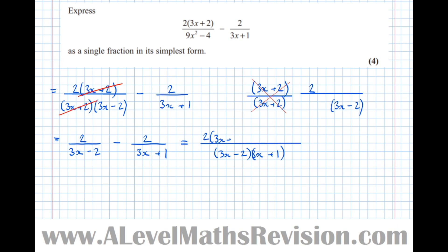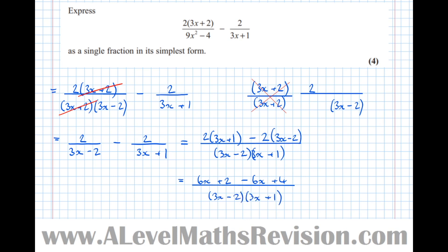So we get 2 lots of (3x plus 1), then a take sign, and on the second fraction I multiplied the denominator by (3x minus 2) — it already had the (3x plus 1) — so I need to multiply the top by (3x minus 2) also. Simplifying the numerator gives 6x plus 2 take 6x. Be careful here because there's a double minus: minus 2 times minus 2 is plus 4. So the numerator becomes 6x plus 2 minus 6x plus 4, all over (3x minus 2)(3x plus 1). The 6x terms cancel and 2 plus 4 leaves 6.